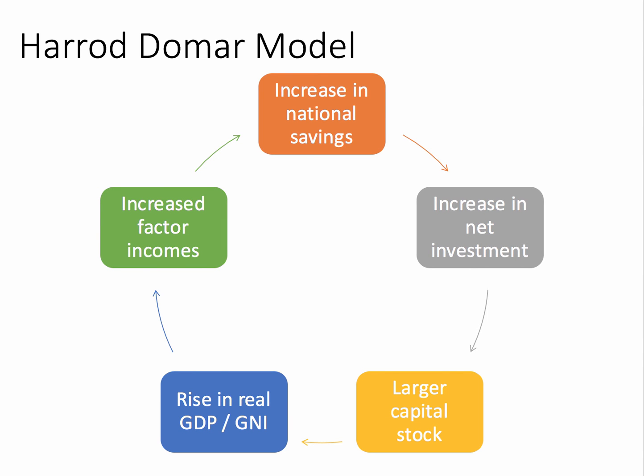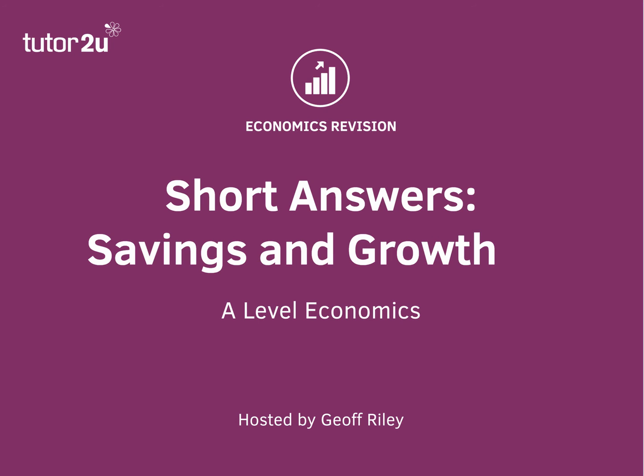Here's a quick reminder of the Harrod-Domar model: an increase in national savings, in theory, channels through to increased investment. As investment increases, the capital stock grows, and if it's productive, it can add to national income per capita, which in turn increases people's incomes, which in turn allows people to save more. There's a virtuous circle here which needs to be encouraged and enhanced. So that's the short answer on savings and growth. Thank you.